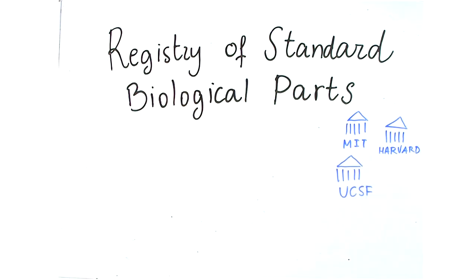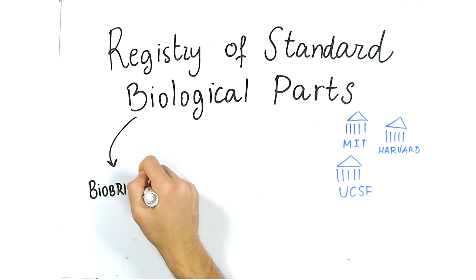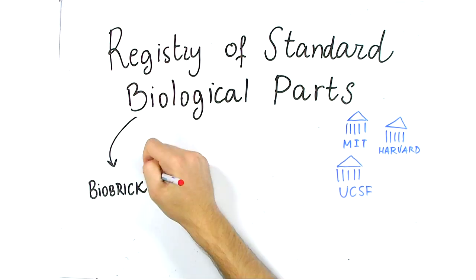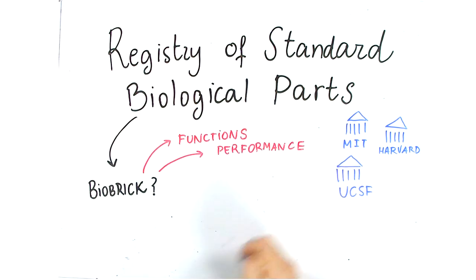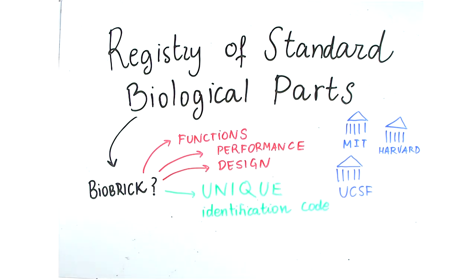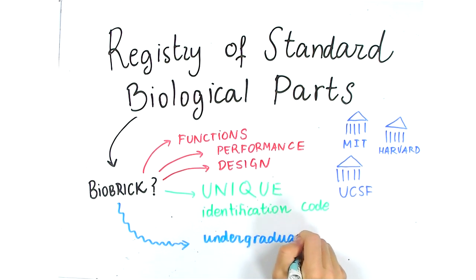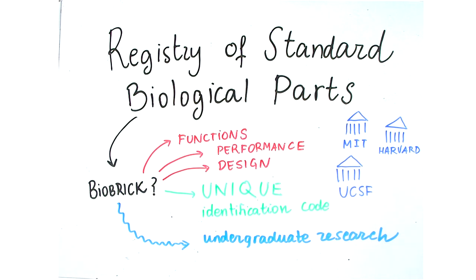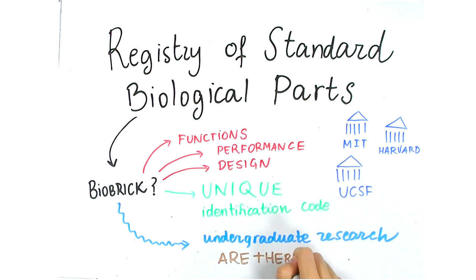In the registry, you can find information and characterization data on all the different parts, and also a catalog which describes function, performance, and design of each part. Every biobrick comes with a unique identification code to make searching for these parts easier. Most of the parts in the biobrick registry are submitted by undergraduate students working on iGEM projects. It is important to keep in mind that a lot of parts lack some of the characterization data.